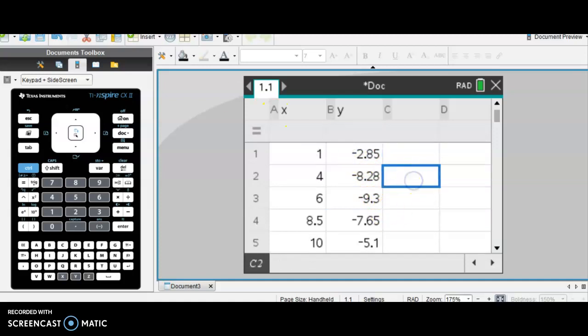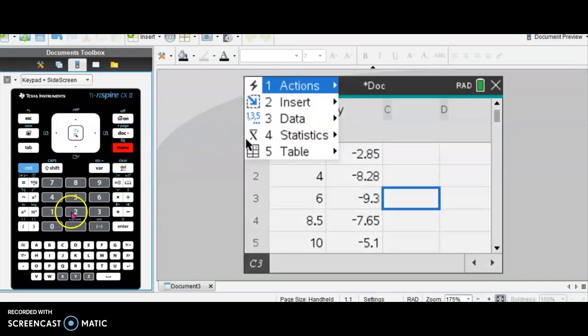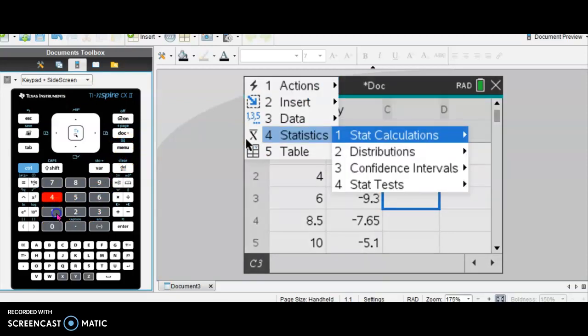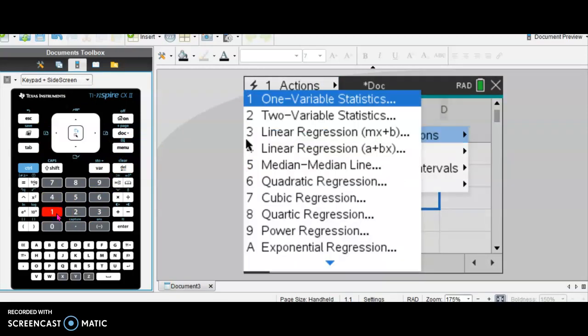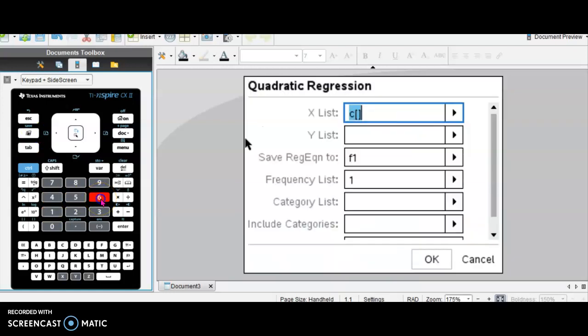Now we're going to do our regression. Make sure your cursor or highlighted box is below, not up here in the gray. Let's follow our steps. Menu, 4 for statistics, 1 for stat calculations, and we are doing a quadratic regression, which is number 6.